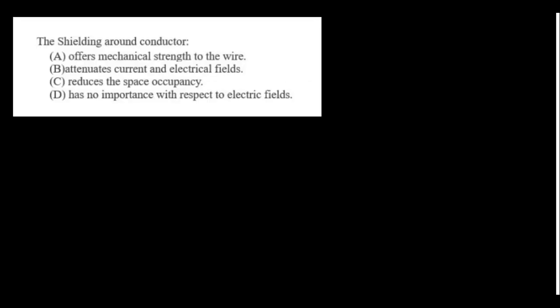The shielding around a conductor is used to avoid electromagnetic interference and electric fields. It alternates current and electrical fields. For example, a sensitive conductor would pick up mobile signals — to avoid that, we shield it.